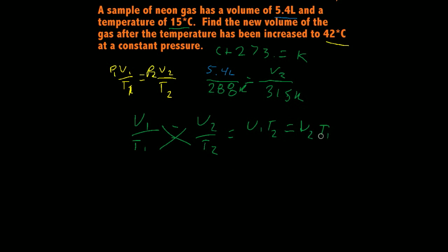So now all we do is divide both sides by T1, and that gives us our adjusted formula, which is V1 times T2 over T1 equals V2.